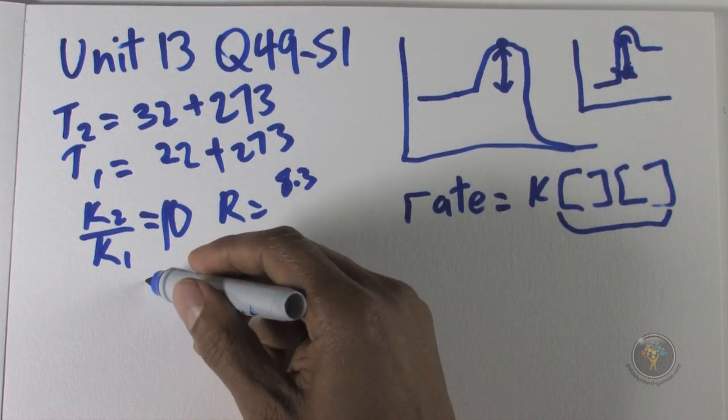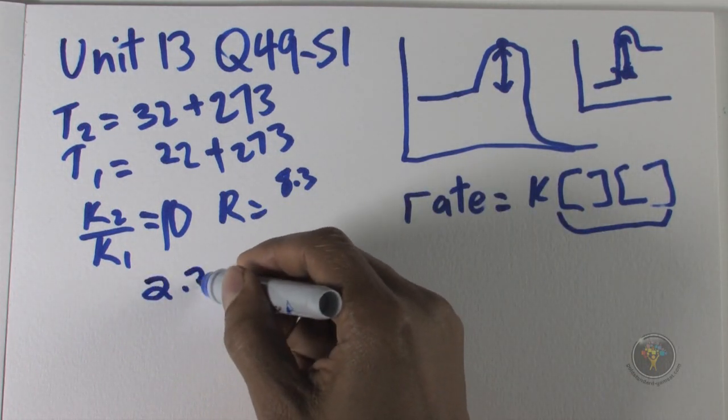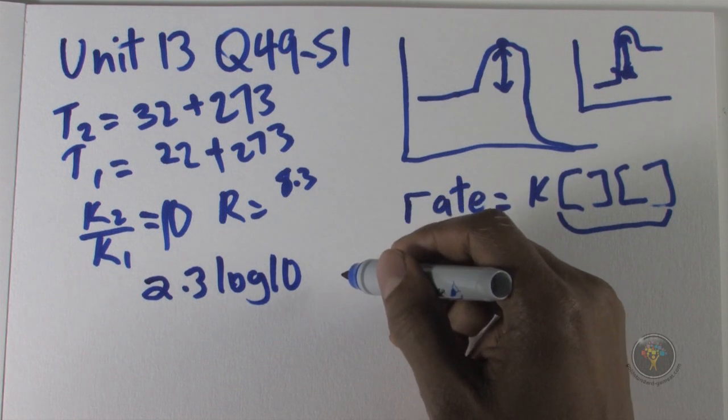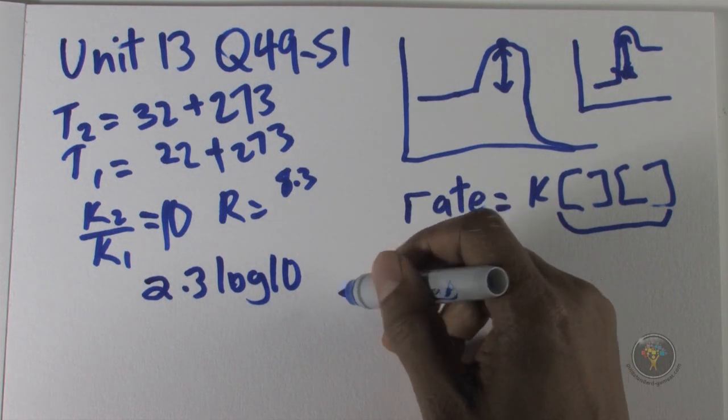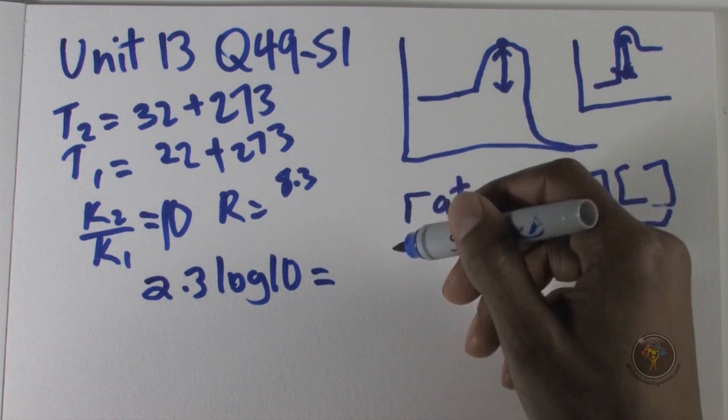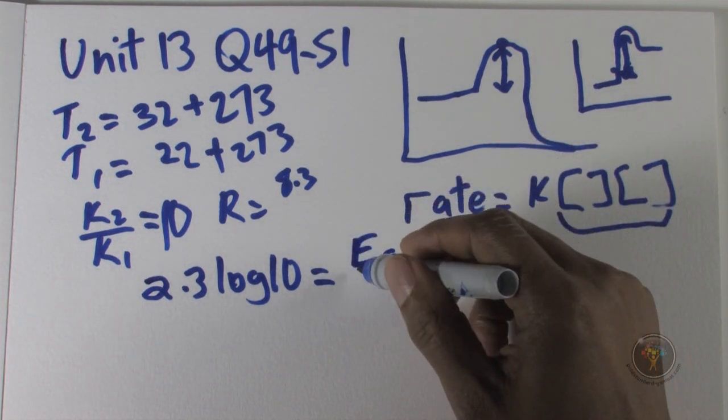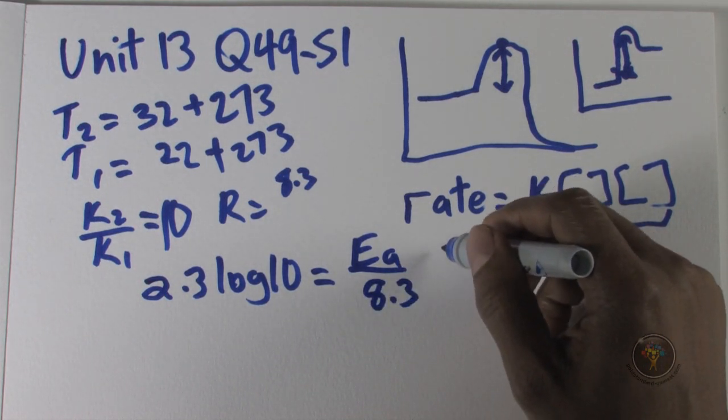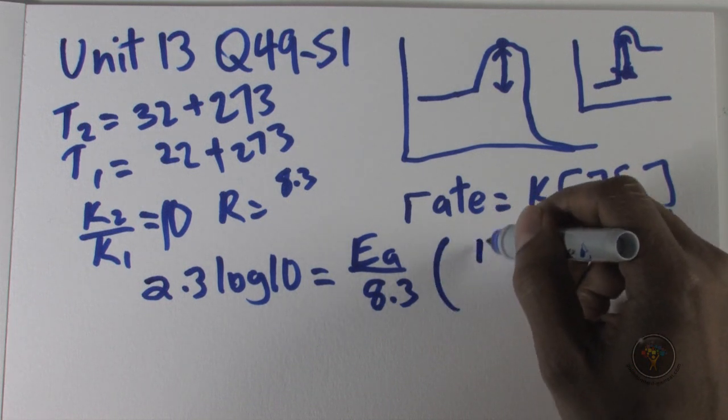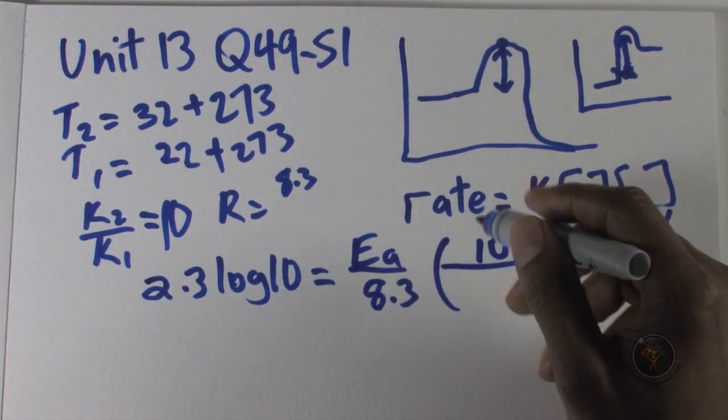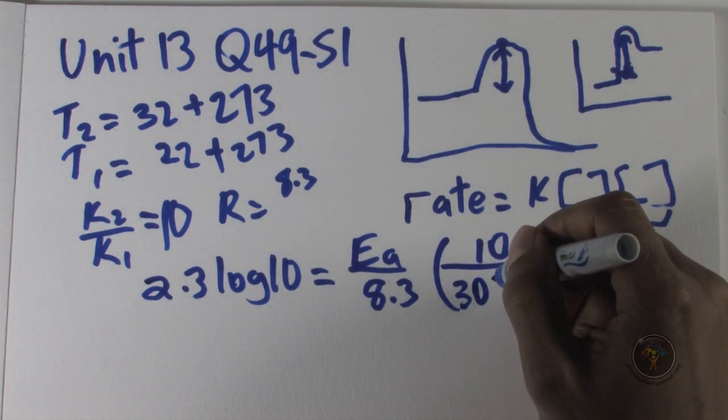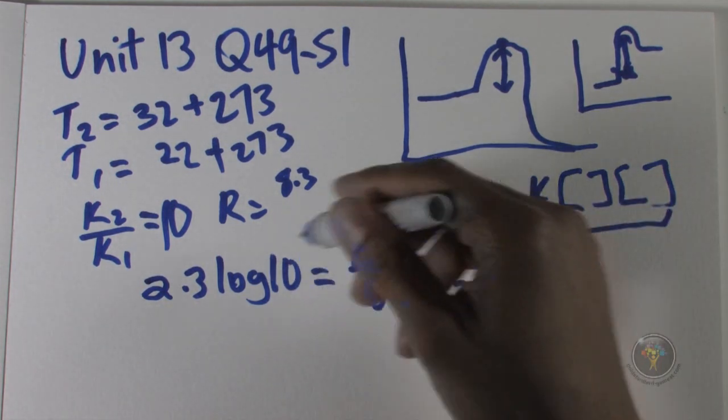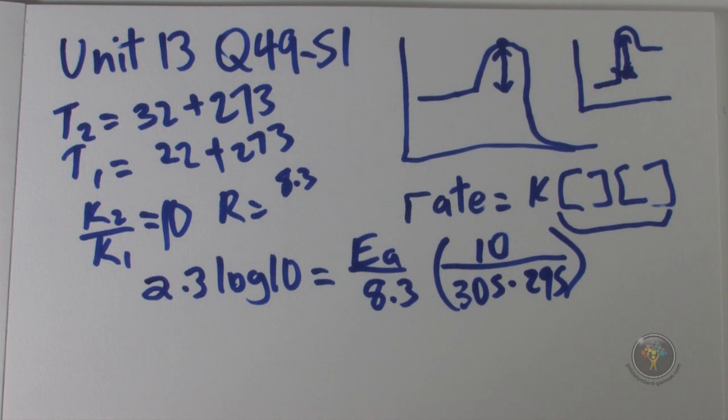Now we go to the equation that we're provided, and we have 2.3 log 10. The rate constant reduces to 10 because we're going 10 times the amount. Ea, the activation energy, over 8.3 which is R, and then we have 10 on top which is the change in temperature, and we have 305 times 295.